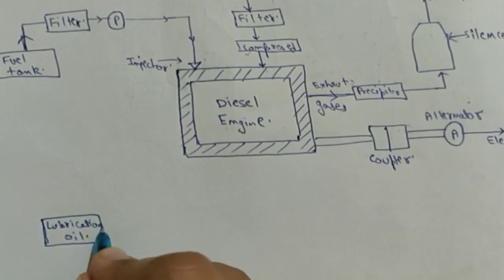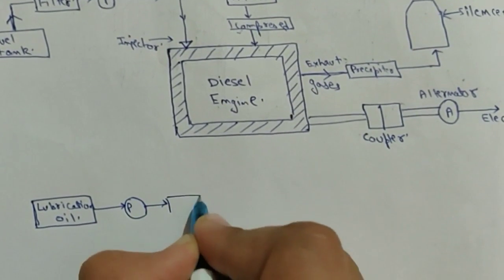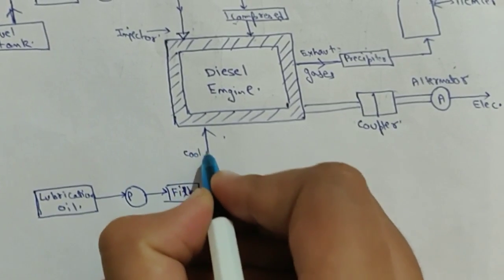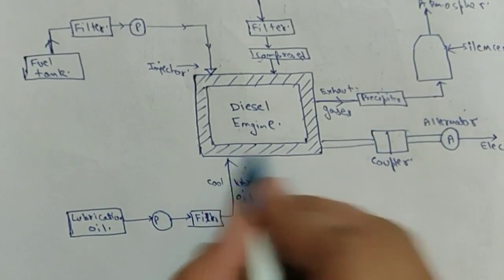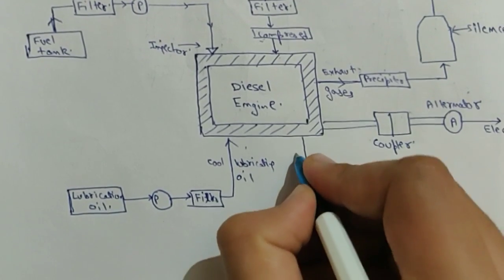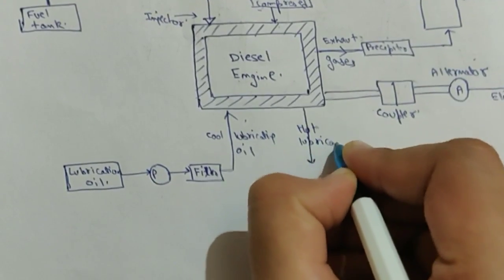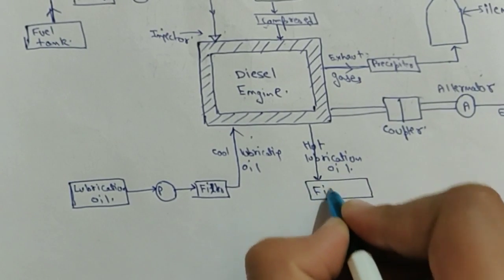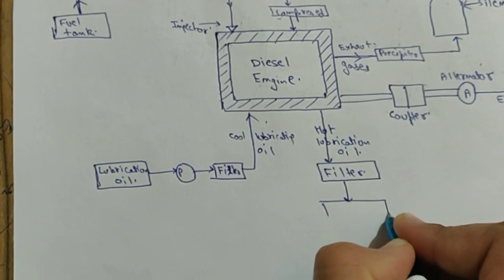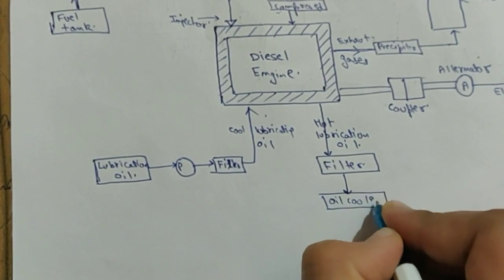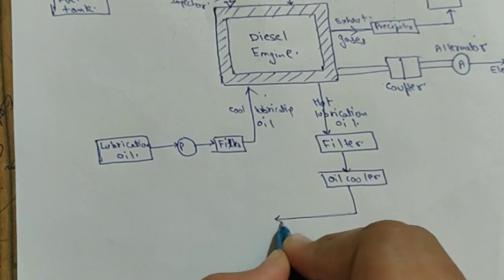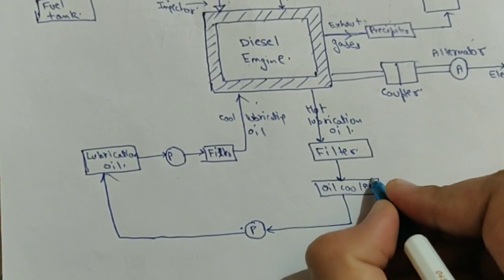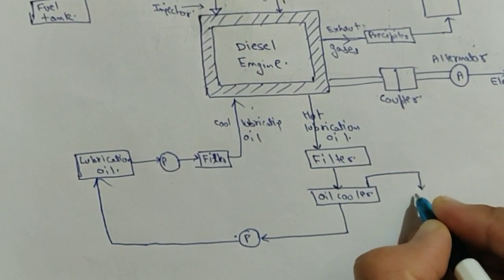The lubrication oil is first pumped, then filtered. The cool lubrication oil enters the diesel engine, cools it, and hot lubrication oil exits. After the hot lubrication oil exits the diesel engine, it is filtered again and passed through an oil cooler. The cooled oil is then pumped back to the lubrication oil chamber.